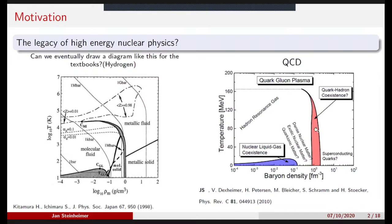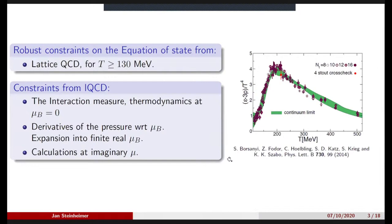The robust constraints we have at the moment on the QCD equation of state come from so-called lattice QCD calculations, where you discretize the QCD Lagrangian and put it on a computational lattice and solve it by brute force. We have results for temperatures above 130 MeV. What is shown on the right is the interaction measure — energy density minus three times the pressure over T to the fourth — a unitless quantity. Once you have this, you can calculate all thermodynamic quantities: pressure, energy density, entropy density, and so on.